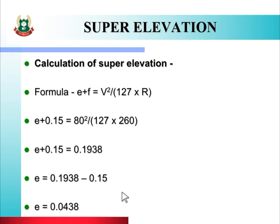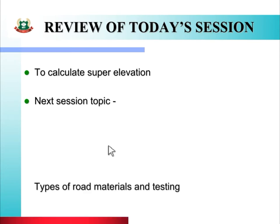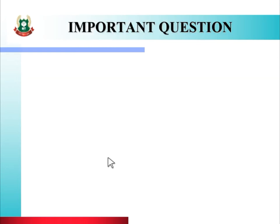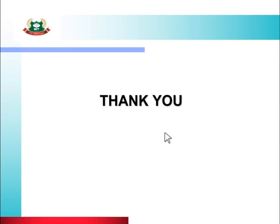In this way we can calculate the value of super elevation. In today's session we studied how to calculate super elevation. In the next session we will see types of road materials and testing. Important question for today's topic as assignment: Design a super elevation for a national highway with design speed of 80 km/h and horizontal curve of radius 150 m, with coefficient of friction F = 0.15. If you face any difficulty, watch the video again or refer to the notes provided, or contact me. Thank you for watching the video.